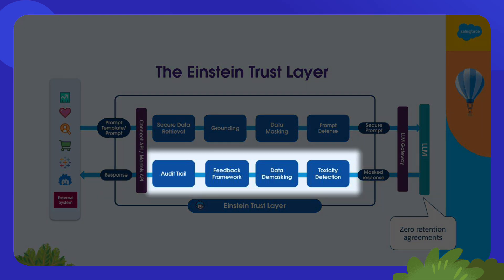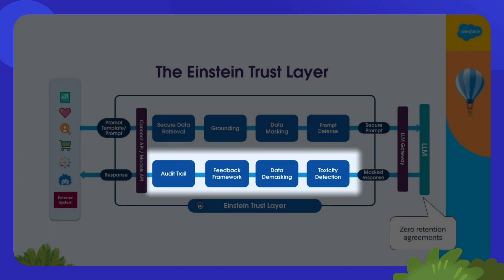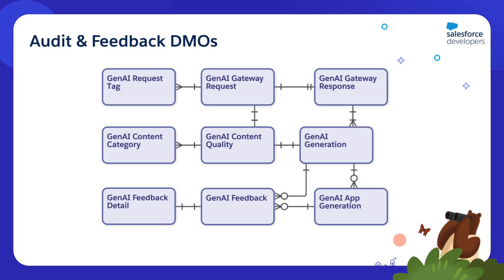The Einstein Trust Layer provides a trusted and secure infrastructure that allows you to build secure prompts that incorporate customer data safely and effectively. The Trust Layer also processes LLM responses, evaluating their quality and toxicity. This means it is able to log your generative AI requests, generations, and provided feedback into several data model objects in Data Cloud.